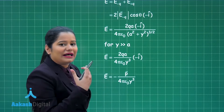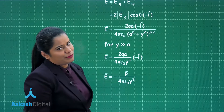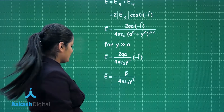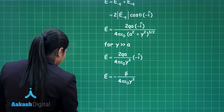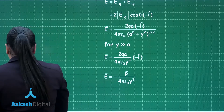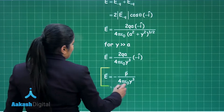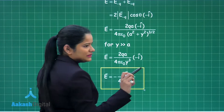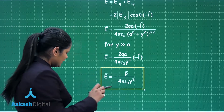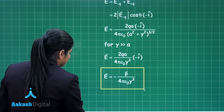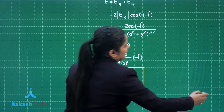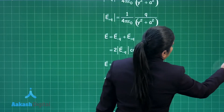The negative sign in this expression indicates that the electric field at point P is in the opposite direction to that of the dipole moment of the electric dipole. This result is now boxed. Let me explain the marking scheme for this part of the question.